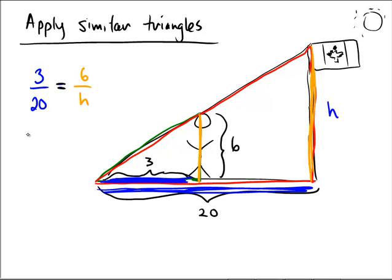Okay, now if we perform some cross multiplication, h times 3 is 3h, and 6 times 20 is 120. So therefore, if we divide both sides by 3, you can see that h must equal to 40.